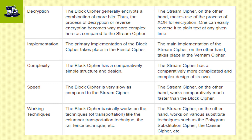In decryption, block cipher generally encrypts a combination of bits and blocks them. As a result, the process of decryption or reverse encryption becomes far more complex compared to stream cipher. Stream cipher, on the other hand, makes use of the XOR operation for encryption, so one can easily reverse each byte of plain text at a given time — making it simpler.